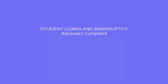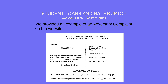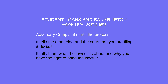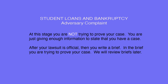We provided an example of an Adversary Complaint on the website. An Adversary Complaint is what starts the process — it tells the other side and the court that you are filing a lawsuit, what the lawsuit is about, and why you have the right to bring it. At this stage, you are not trying to prove your case; you are just giving enough information to state that you have a case. After your lawsuit is official, then you write a brief, where you are trying to prove your case. We will review briefs later.